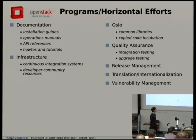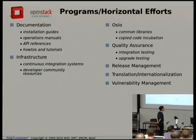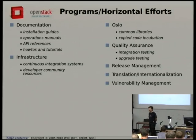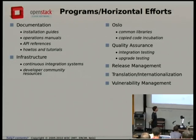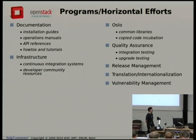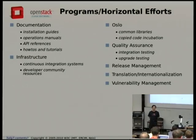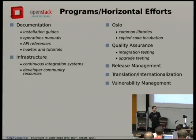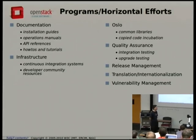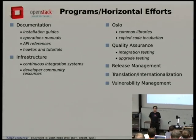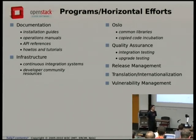With a project of this scale, there are a number of horizontal efforts and programs: a documentation team, a team that identifies bits of code getting copied around and refactors them into separate libraries, and a quality assurance team. The QA team doesn't sit there running tests all the time — what they do is make sure all the tests that other people are writing are working correctly, and when things go wrong they help triage them. The testing infrastructure is large enough that we still need a team to coordinate that effort.